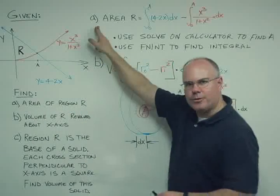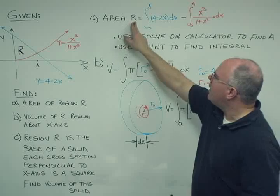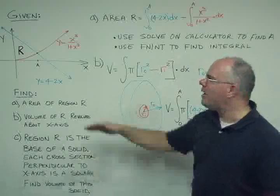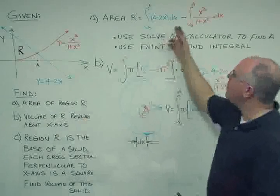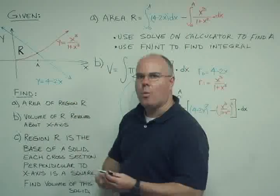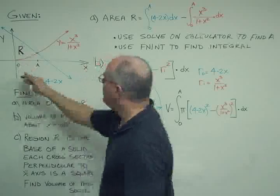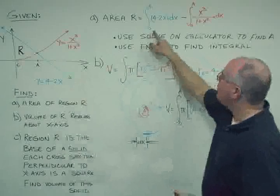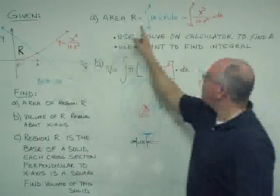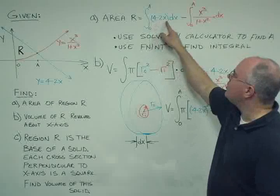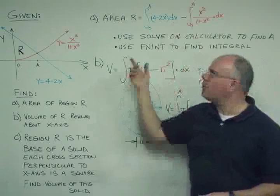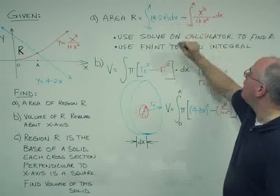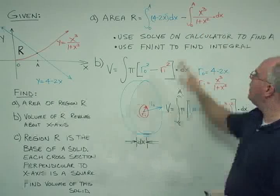I can find the area by finding the area under the blue curve and subtracting the area under the red curve. I'm integrating from x equals 0 out to x equals A, the intersection point. So I integrate from 0 to A the blue curve, 4 minus 2x dx, and subtract from that the area under the red curve, the integral from 0 to A of x cubed divided by 1 plus x squared dx.